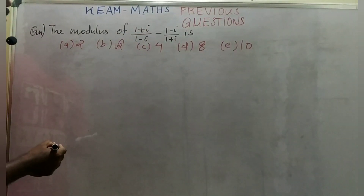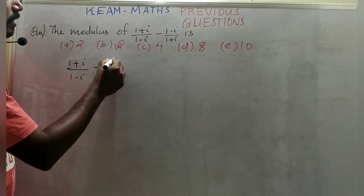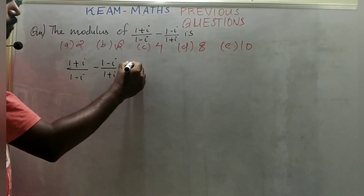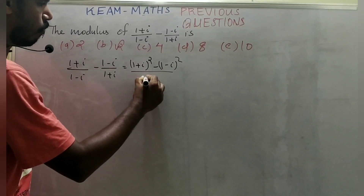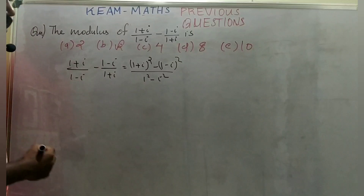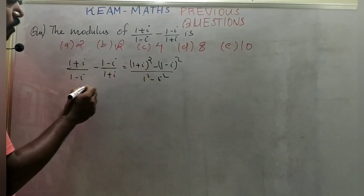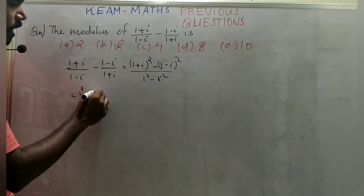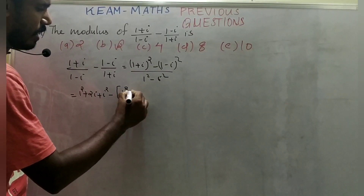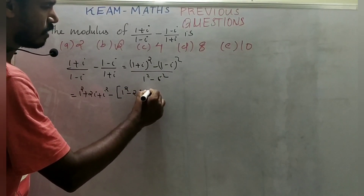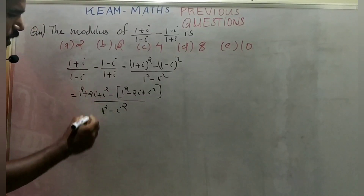Next question: (1 + i)/(1 - i) minus (1 - i)/(1 + i). Combining over common denominator (1 - i)(1 + i): numerator = (1 + i)² - (1 - i)². Expanding: (1 + i)² = 1 + 2i + i² and (1 - i)² = 1 - 2i + i².